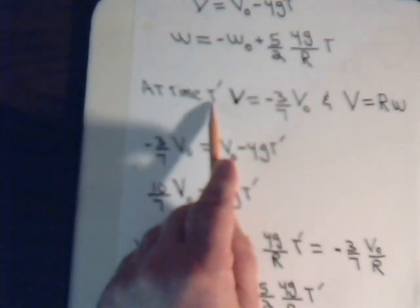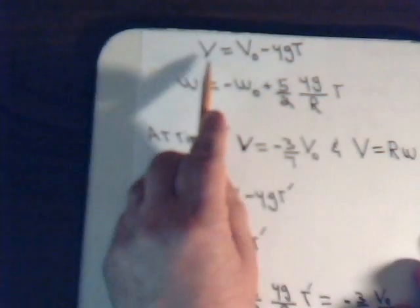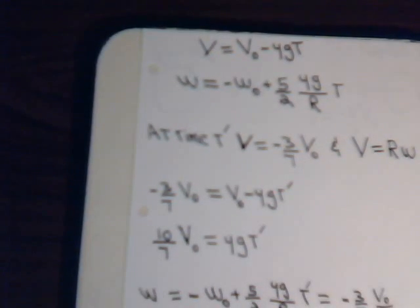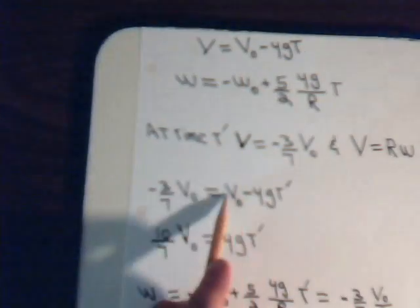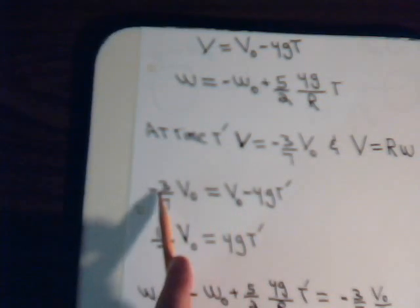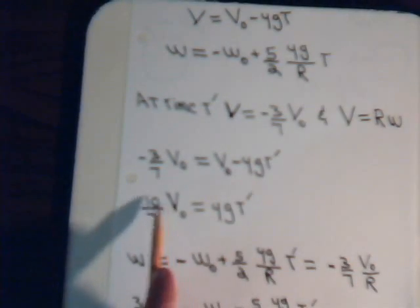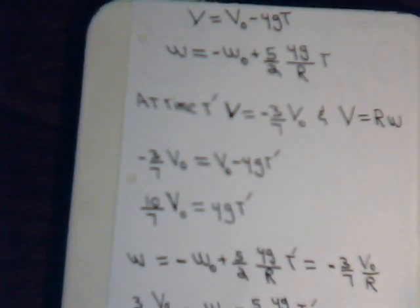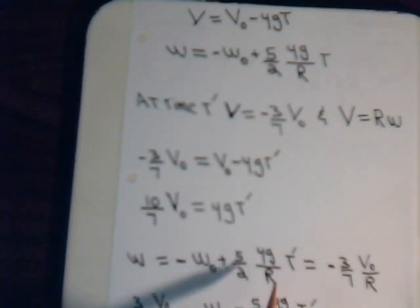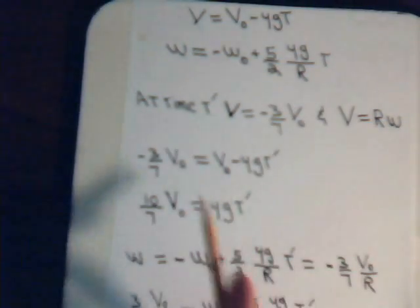At time t-prime, the linear velocity must be minus three-sevenths V-naught, which equals V-naught minus mu·g·t-prime. Rearranging, we find that mu·g·t-prime equals ten-sevenths V-naught. If we know the coefficient of friction and it stays constant, we can determine the time at which the ball goes into pure roll while rolling backwards, provided we also know the initial linear velocity.